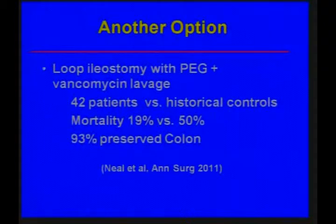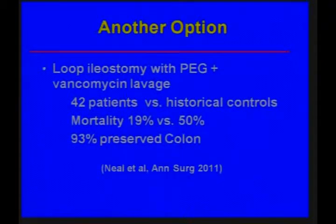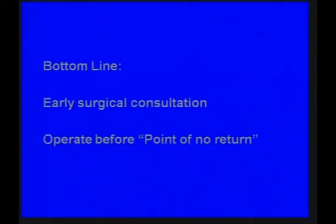However, the people in Pittsburgh have developed another option. They put in a loop ileostomy, preserving the colon, but then lavaging the diseased colon for days with a PEG solution with vancomycin. Their mortality — not a randomized controlled trial, but compared to historical controls — was 19% versus 50% for total colectomy. And many of these patients were able to have their colon reconnected once the C. difficile was controlled. So I would like to see a controlled trial of this option. The bottom line is early surgical consultation, and in hindsight, to operate before the point of no return.